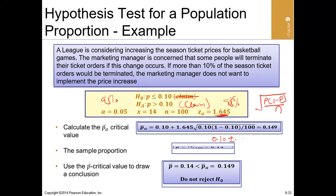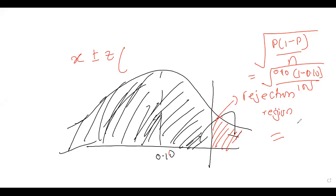So we have 0.1 plus or minus 1.645 times the standard error we computed. From the standard error calculation, 1 minus 0.1 is 0.9, times 0.1.